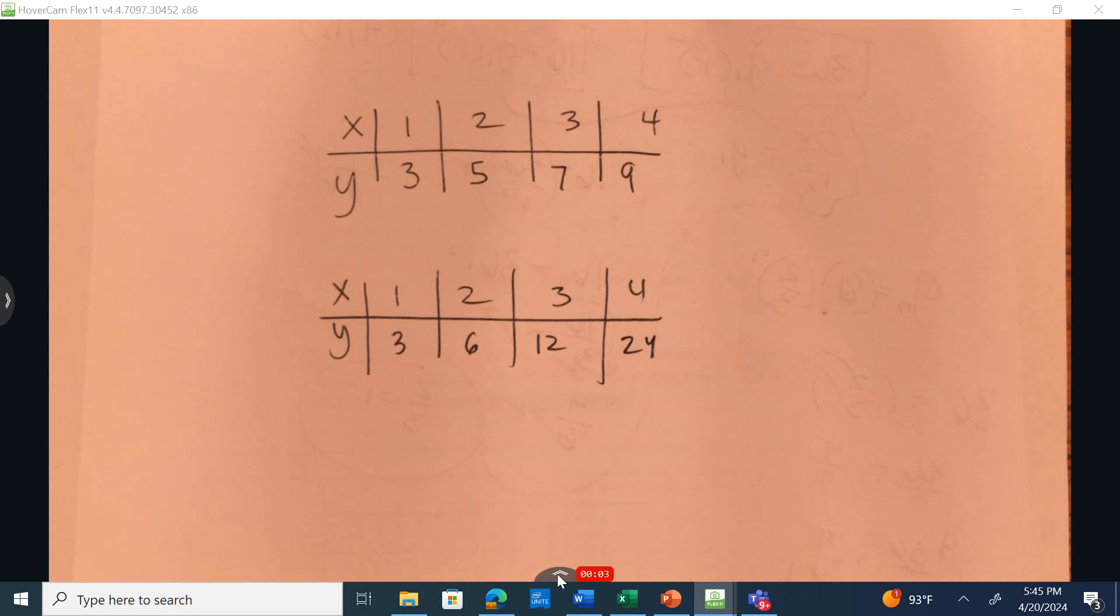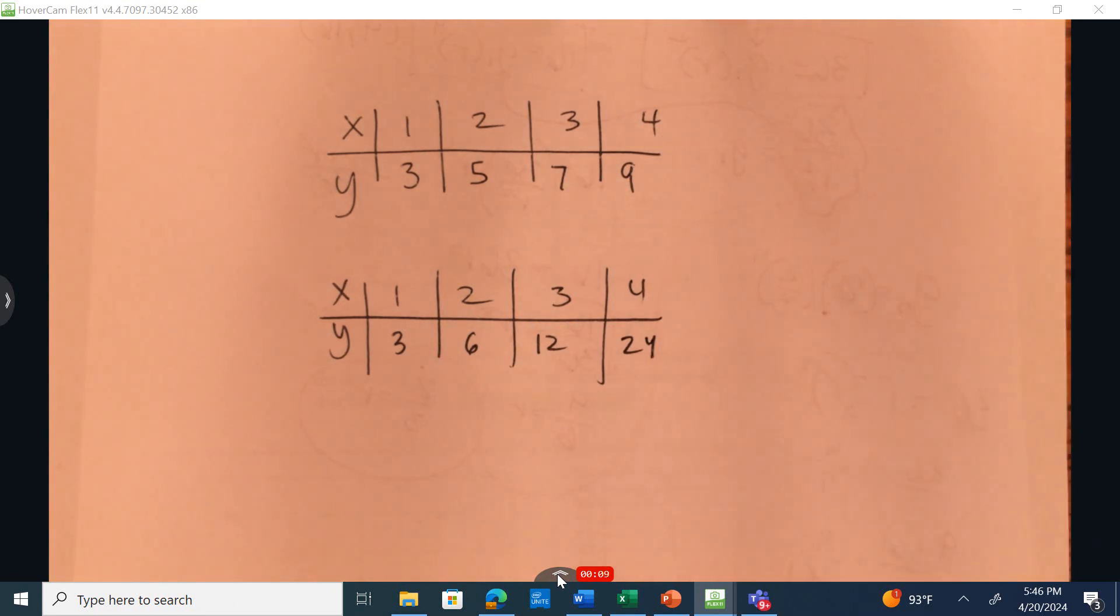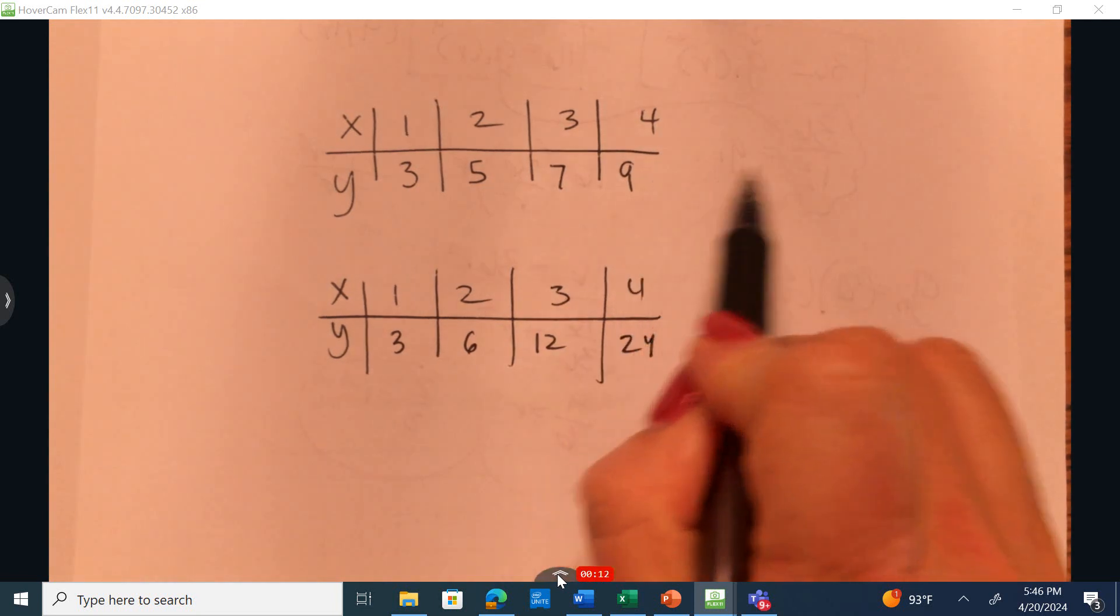Before I explain number 7, I want you to look at these two different functions. Now, I could expand this out to 5, 6, 7, 8, 9. It would be really easy to come up with the y values, right? I'd just continue to add 2.